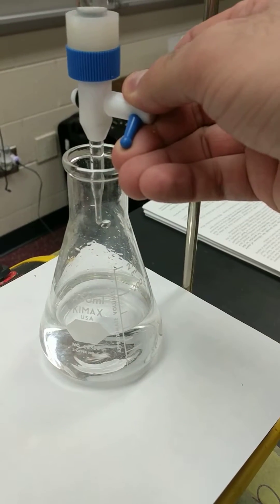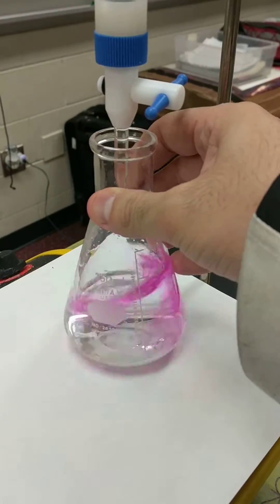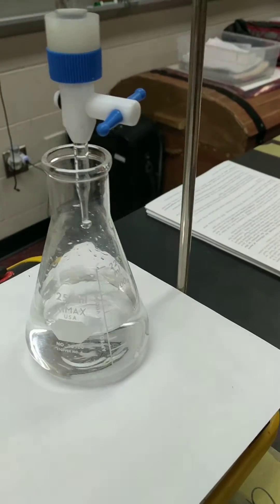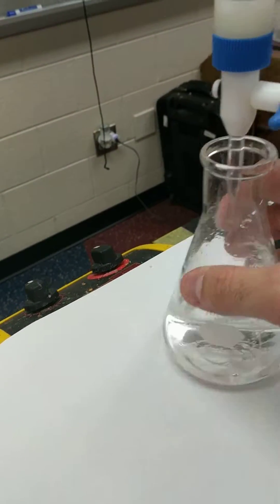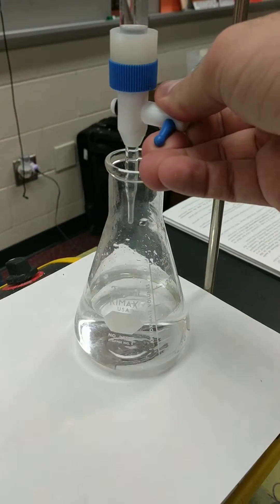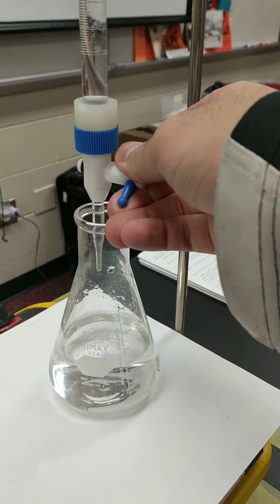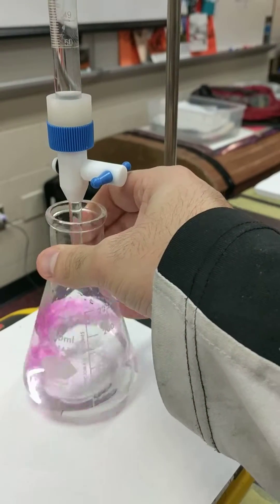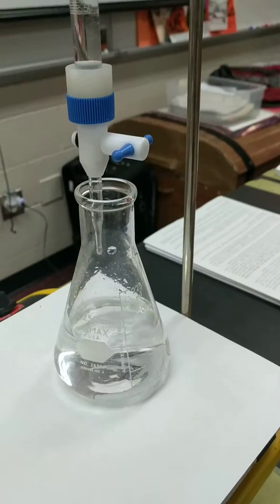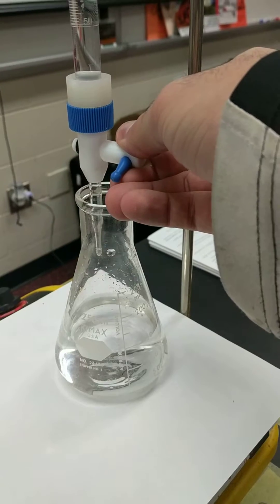So I want to drop it slowly, slowly, slowly. Color still goes away. I guarantee like my next drop is probably going to do it, right? Or very close to it. So I'm going to do one more drop. And oh, that is so close. Did you see how long that pink color was?